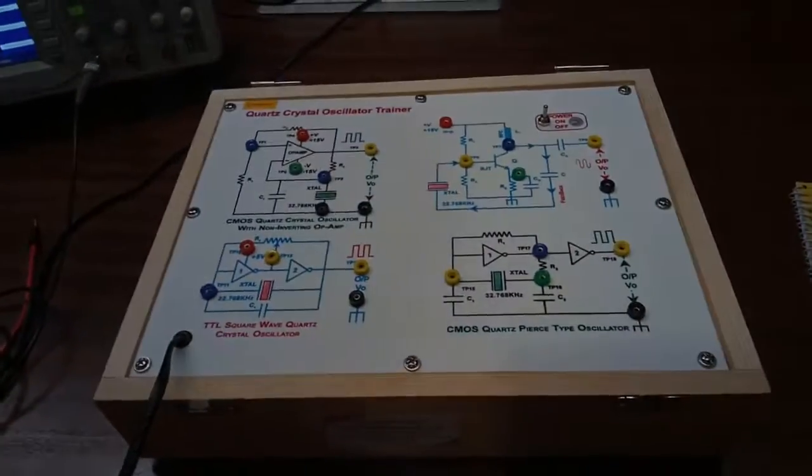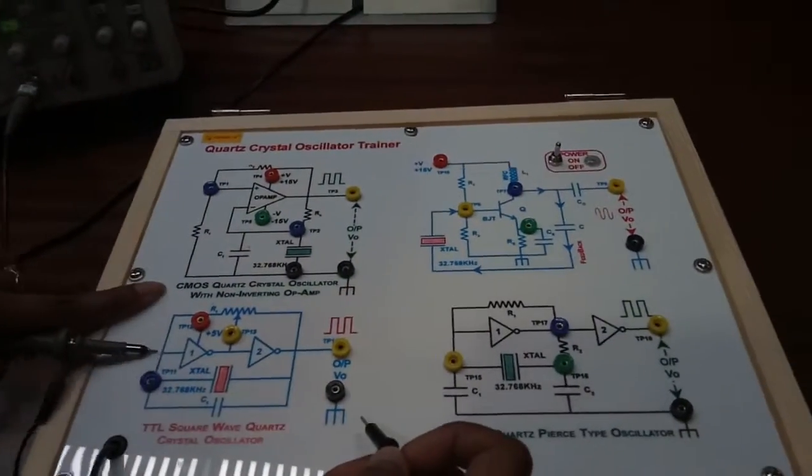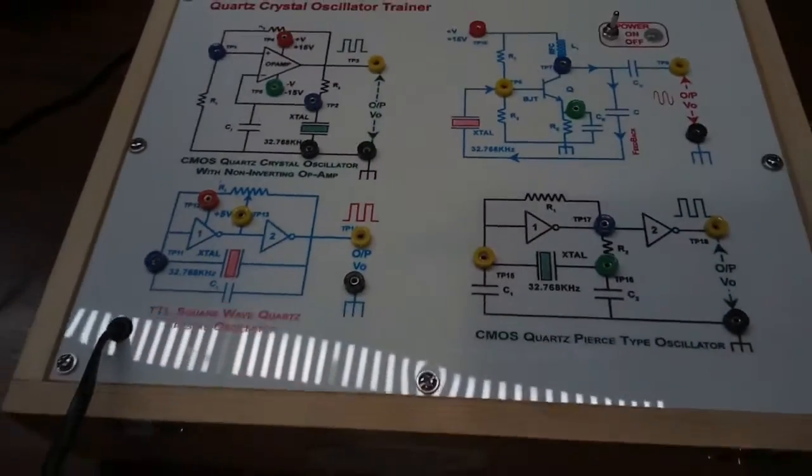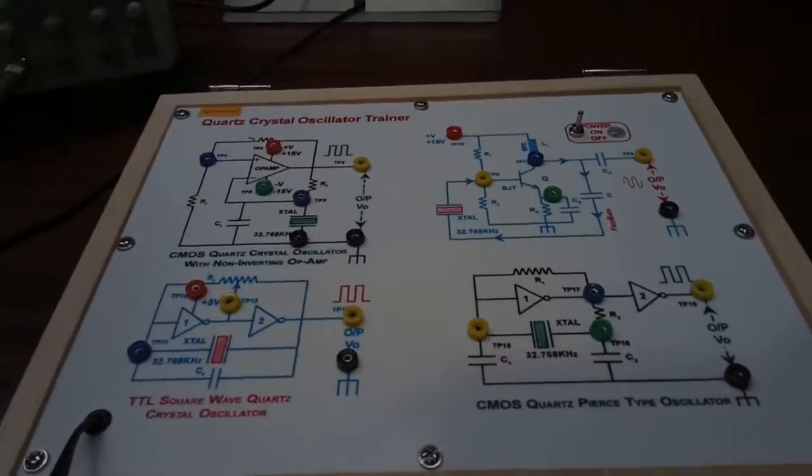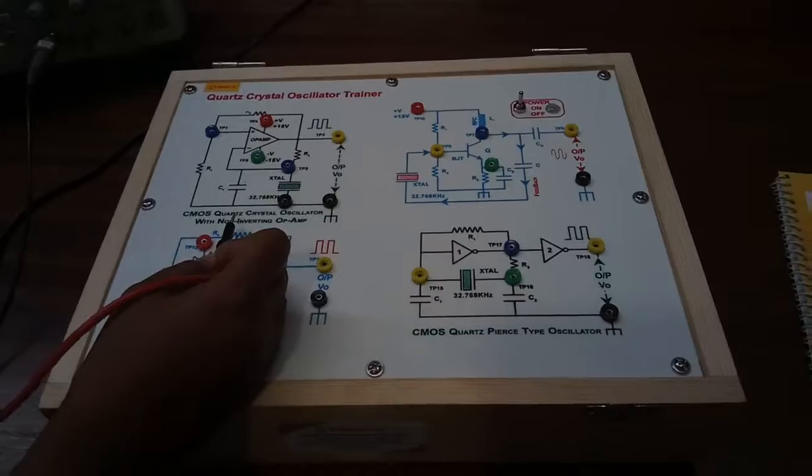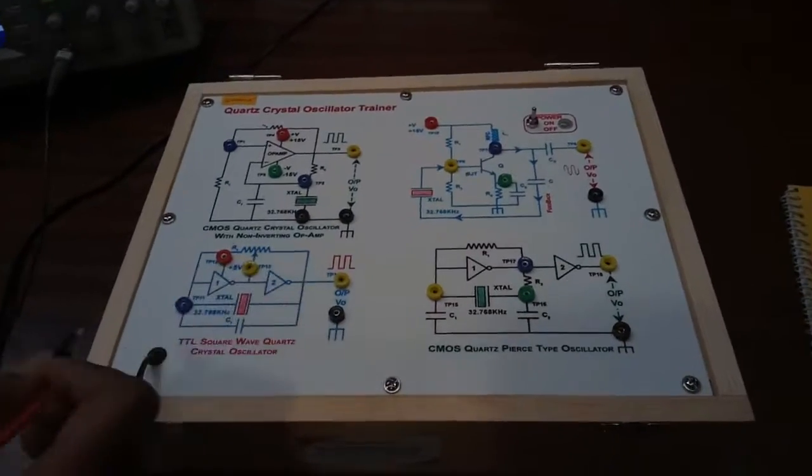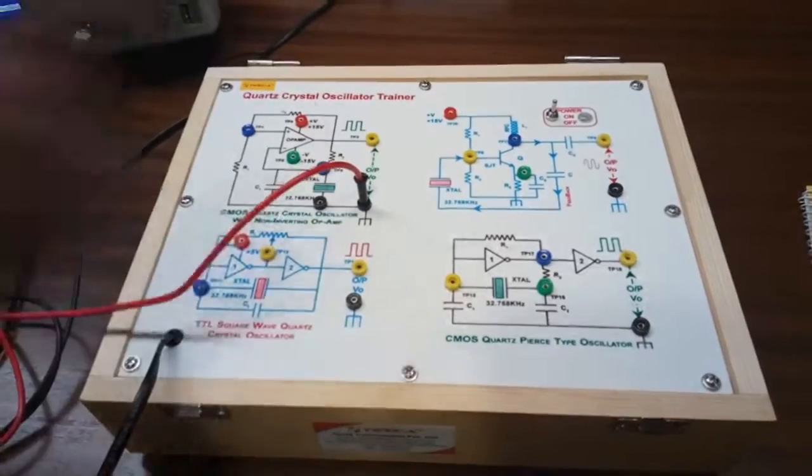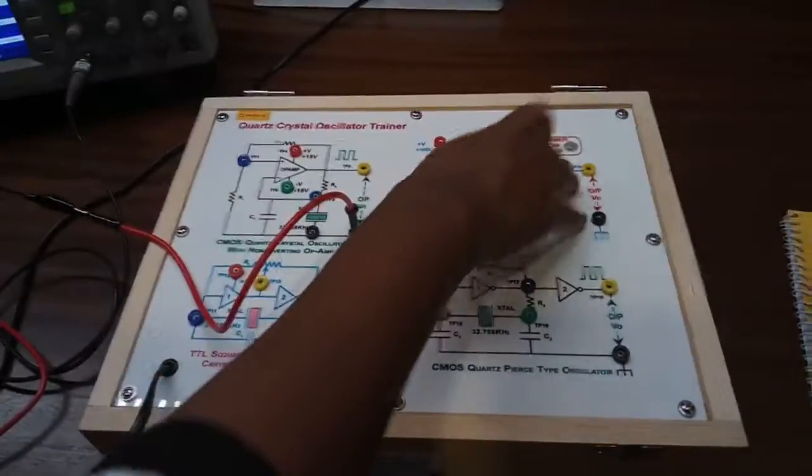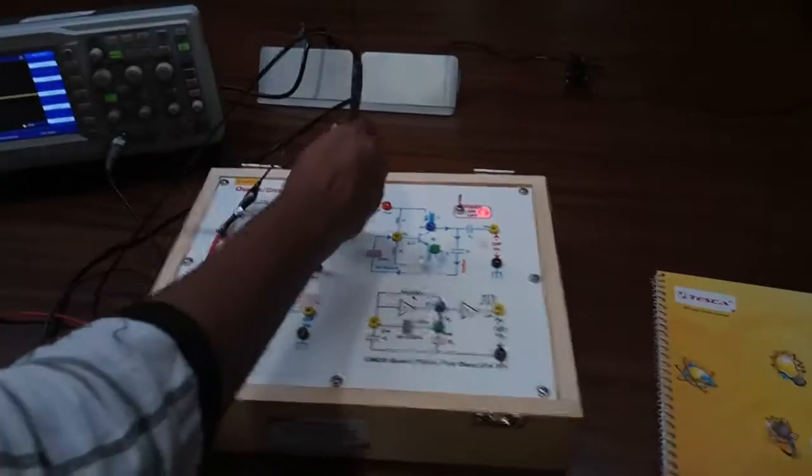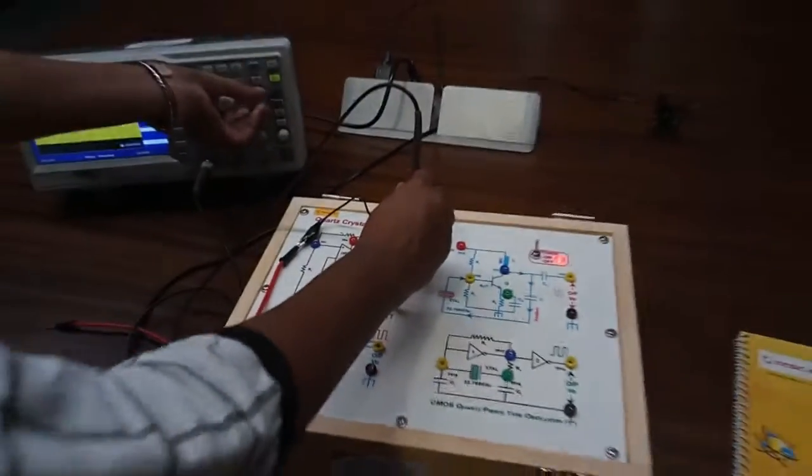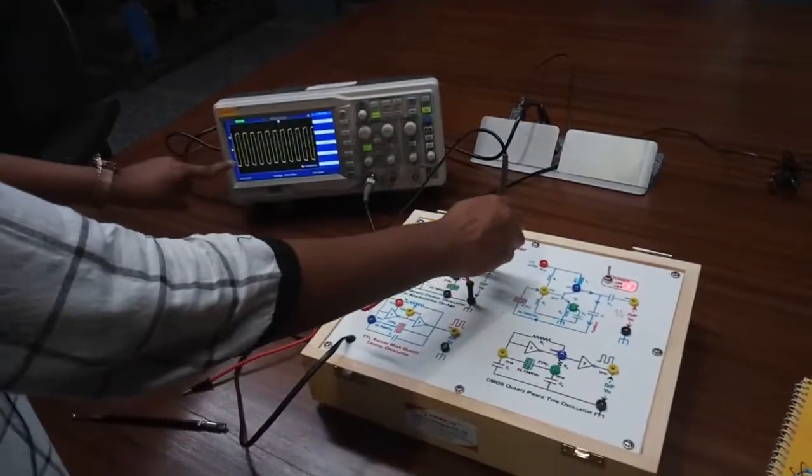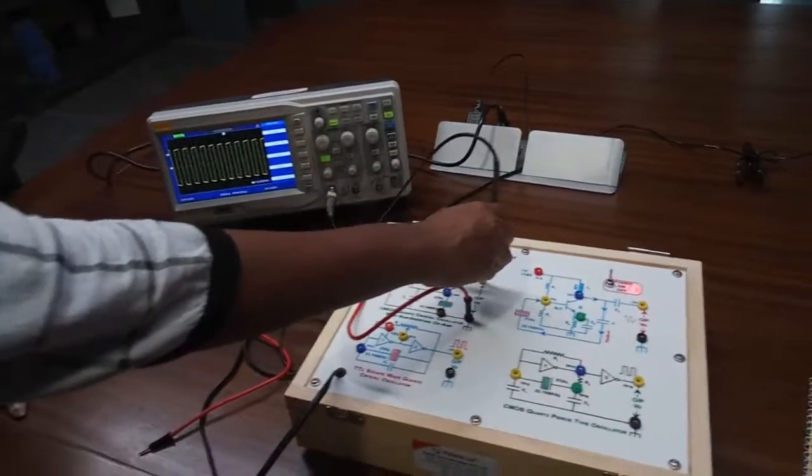First, we are going to observe the output waveform of CMOS crystal oscillator with non-inverting op amp. Connect the ground terminal of the CRO here and turn on the kit. We can see the square wave on the DSO.